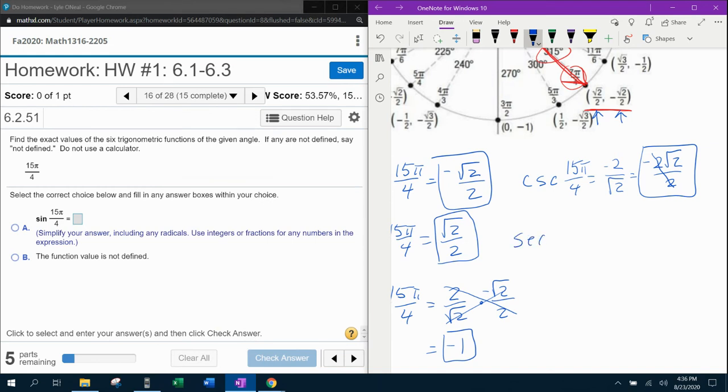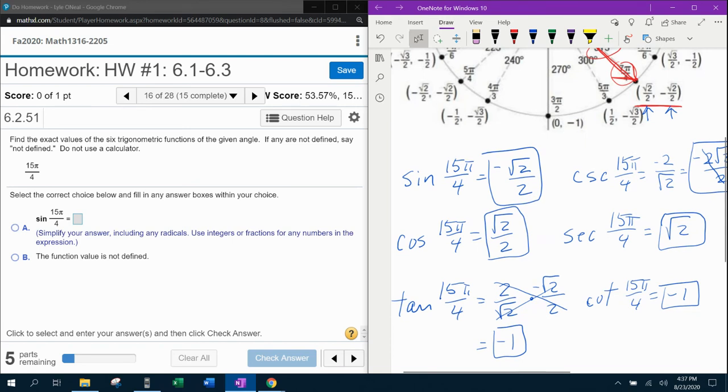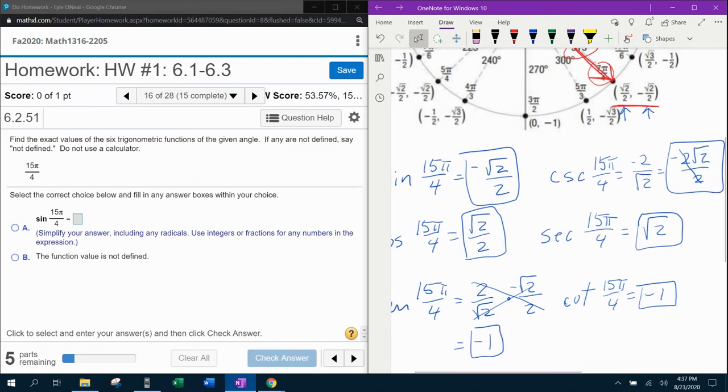All right, now for secant of 15π over 4, that's going to be the same reciprocal but positive. So that's going to be positive square root of 2. And for cotangent 15π over 4, that's going to be the reciprocal of tangent. But if I take negative 1 and flip it over, that's still just negative 1. So there's my six trigonometric ratios.